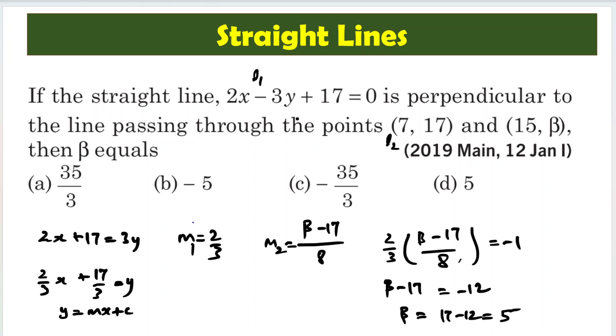This equation we can rewrite as 2x plus 3y equals 2x plus 17, which is nothing but y equal to 2 by 3x plus 17 by 3. We have converted this into y equal to mx plus c format. What is m? m is slope. So the slope of this line is actually equal to 2 by 3.